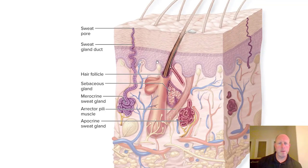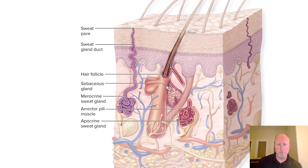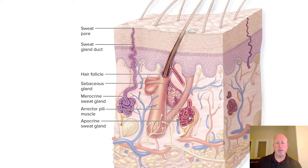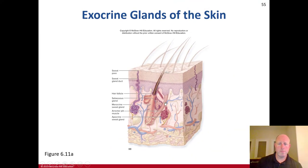Looking at the exocrine glands of the skin diagram: you can see the sweat pore from the merocrine sweat gland, up the sweat gland duct, and the pore at the epidermis at the stratum corneum. The hair follicle has the sebaceous gland on the side, secreting sebum onto the hair follicle. The arrector pili muscle is what helps stimulate the goose bump response — basically an involuntary muscle response. The apocrine sweat gland also goes to the hair follicle, just like the sebaceous gland does. The apocrine gland belongs to the apocrine family; sebaceous gland belongs to the holocrine family.